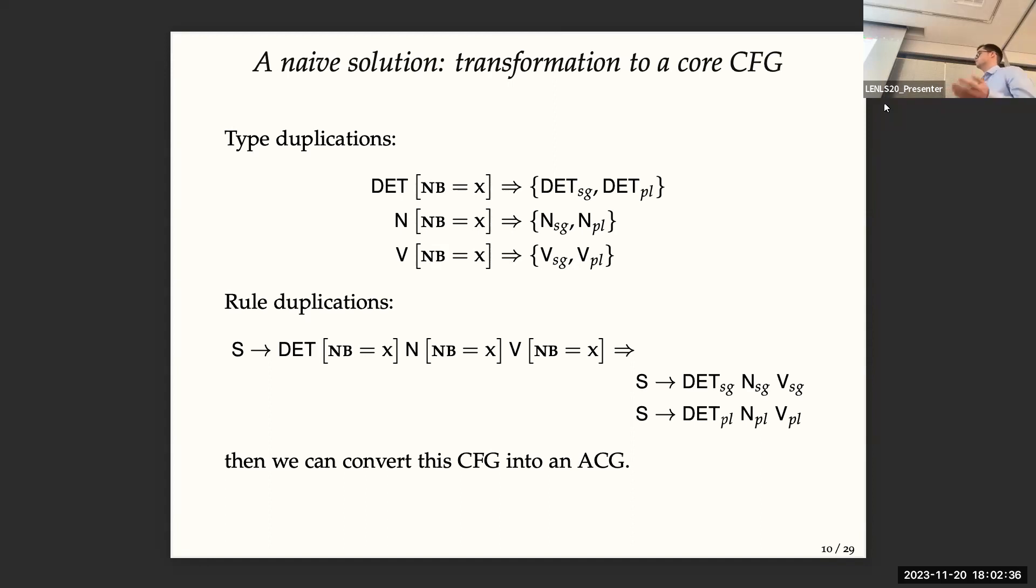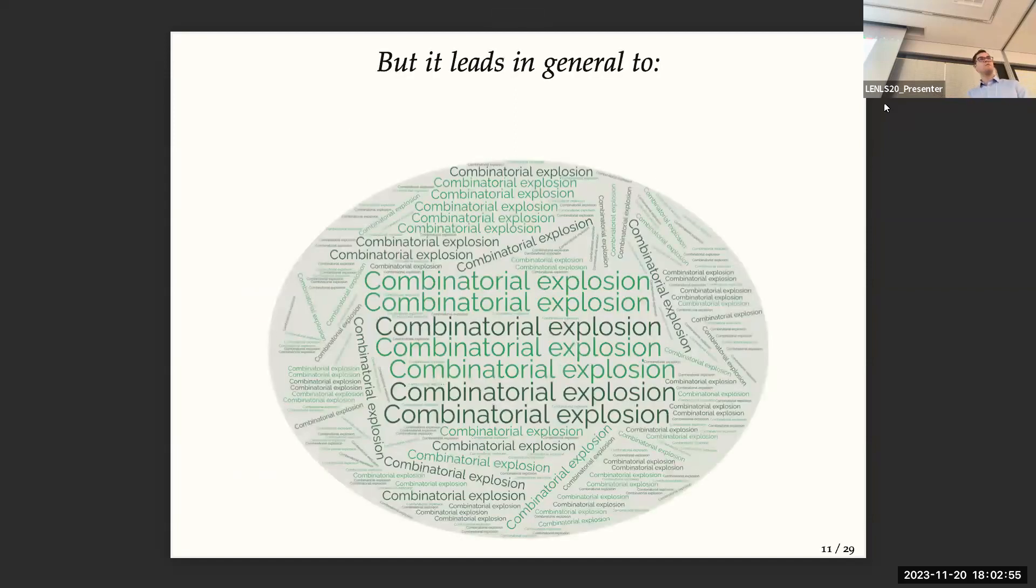Which is fine because we are converting this into a simple CFG, and we know how to encode a simple CFG into an ACG. However, if you do this kind of manipulation in French or a lot of languages, it's not scalable because you have a big combinatorial explosion. And this is not satisfying at all. So this work tries to solve this problem.